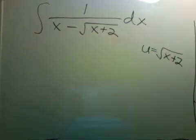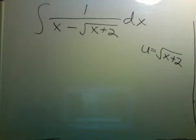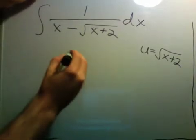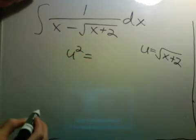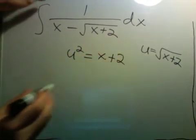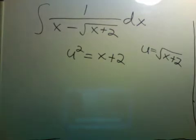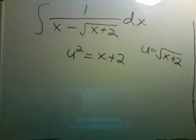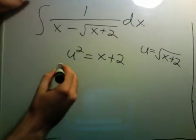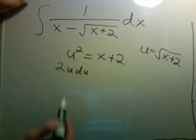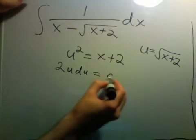Let's try u equals the square root of x plus 2. When we do the substitution, we have to keep in mind that u has to always be positive. It's sometimes easier to get rid of the radical. In an actual definite integral problem, x plus 2 has to be positive, so x has to be greater than or equal to negative 2. Continuing with the substitution, we get 2u du — that's the derivative of this side — equals dx.